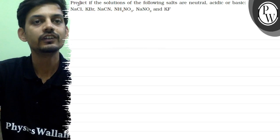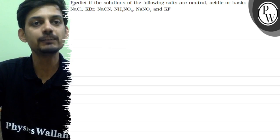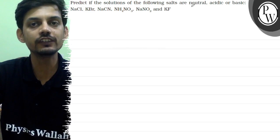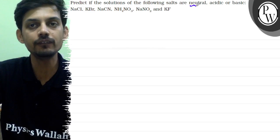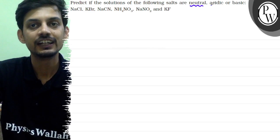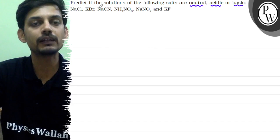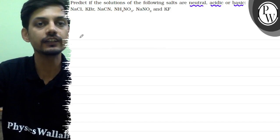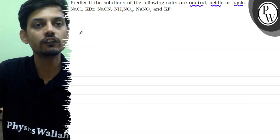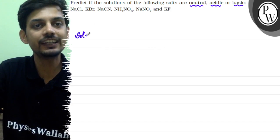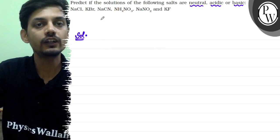The question says: predict if the solutions of the following salts are neutral, acidic, or basic. The key concept is that we can create four different categories of salts.